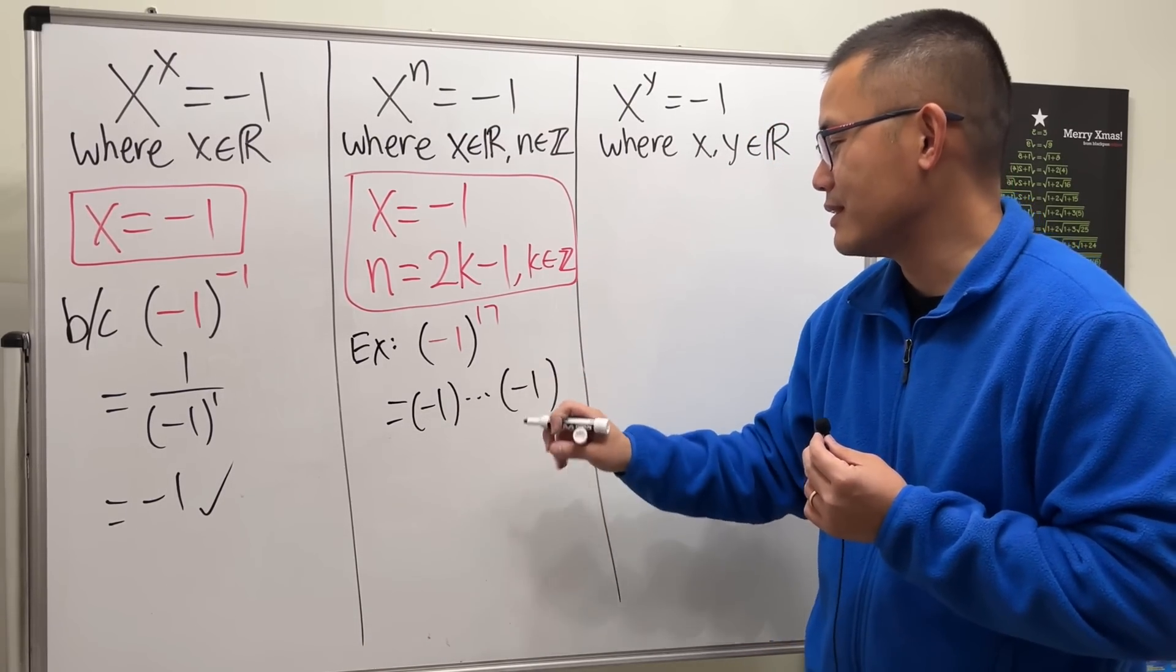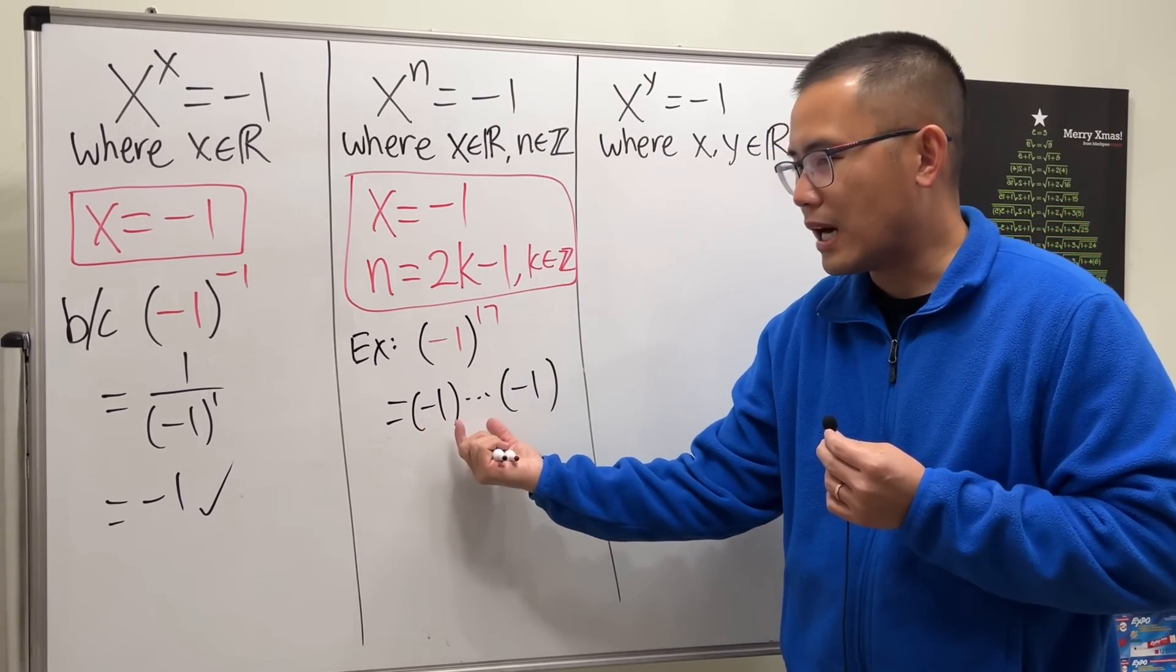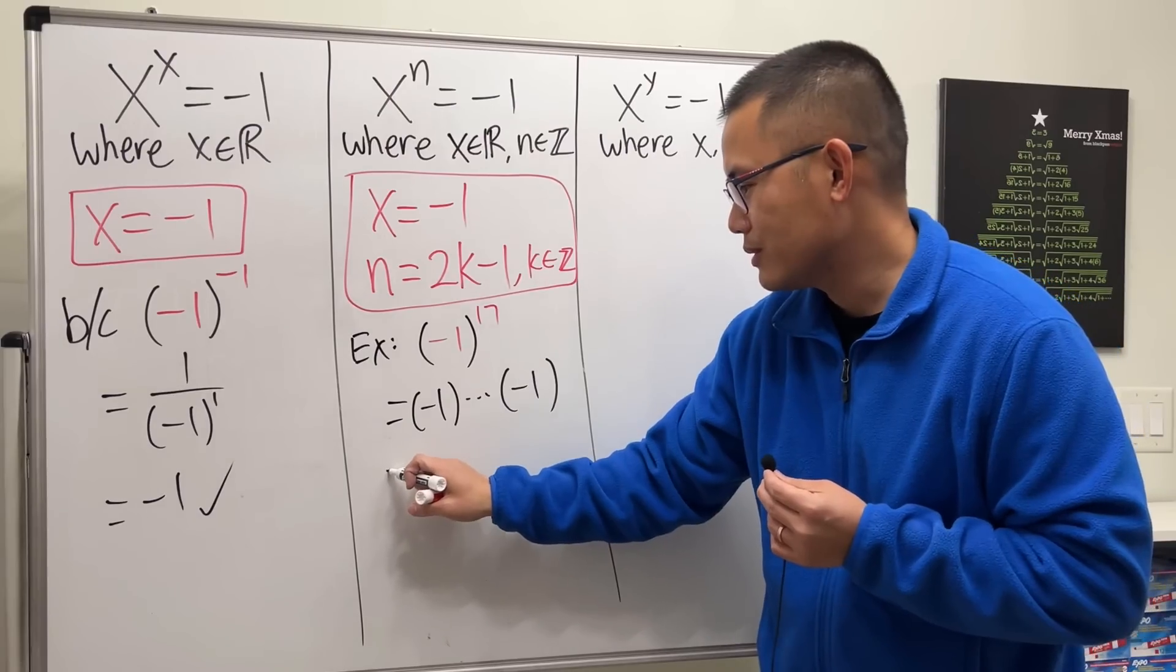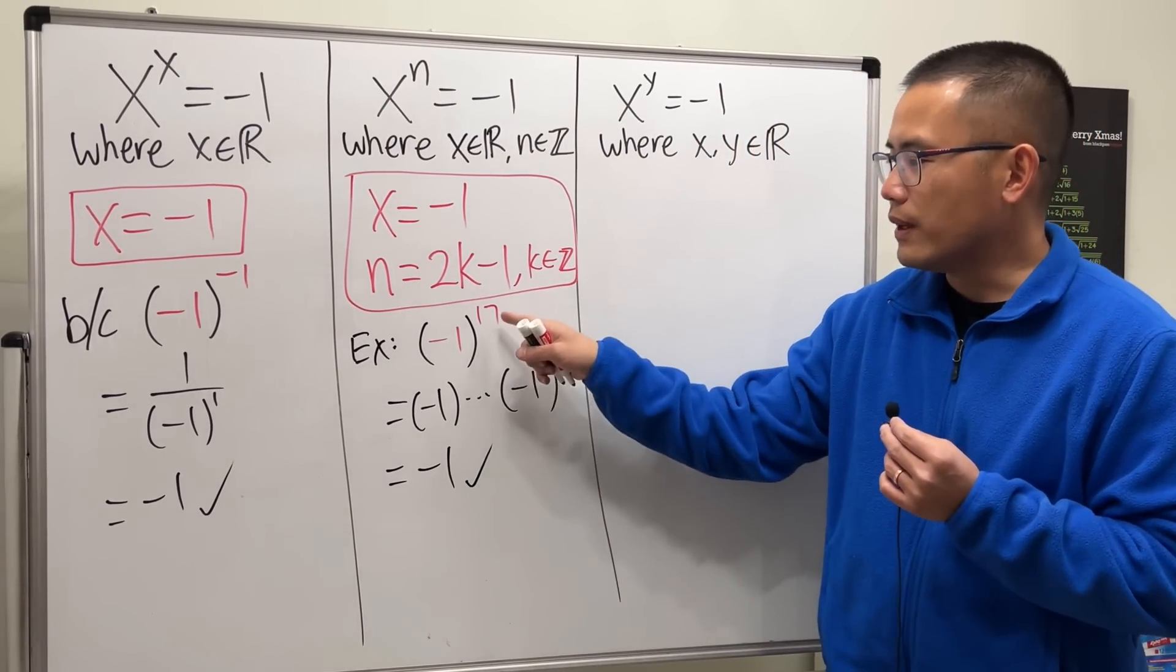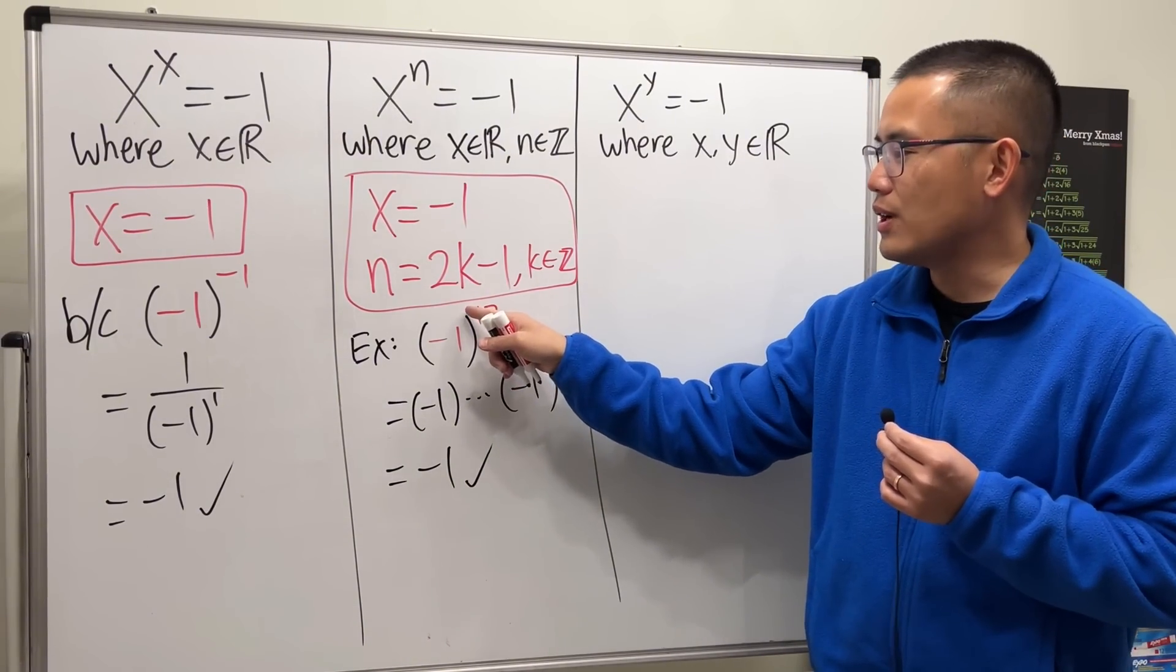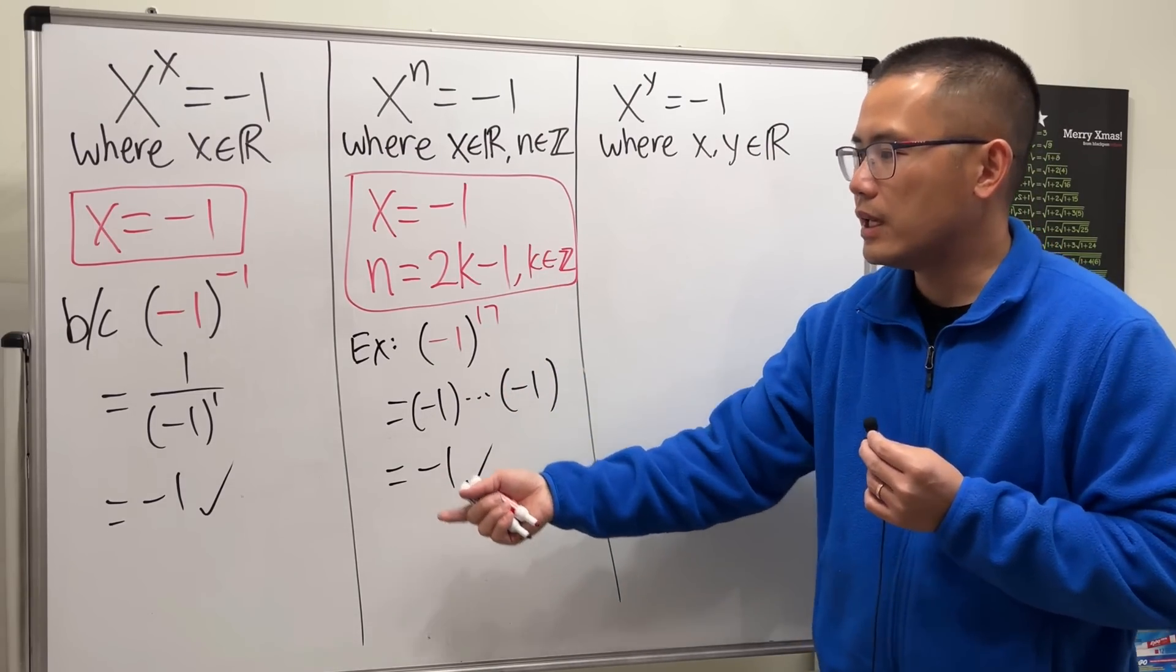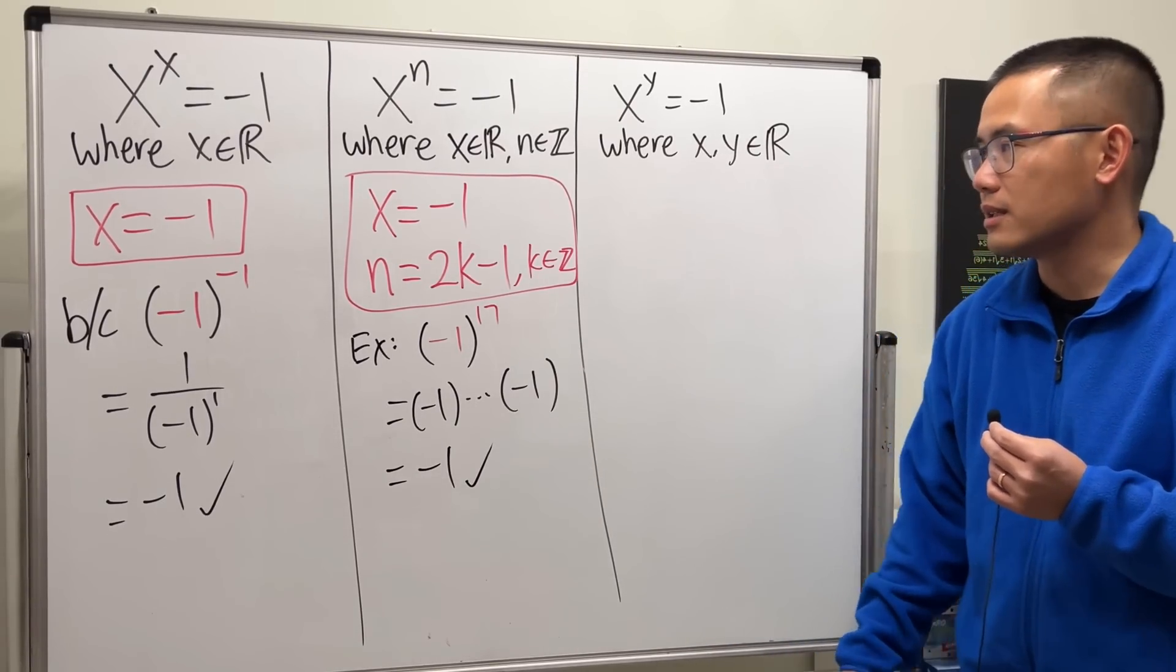So you really will end up with negative 1. Let me just write this down. I'm not going to write down 17 negative 1s, but yeah. If you pair two of them up, it's going to be positive, but at the end, you have a negative. So just do it. You get negative 1, and then you're done. It works for any odd integer. It can also be a negative 17. It will still work. If you have a negative 17, you just bring that down to a denominator, and it will be similar to this. 1 over negative 1. You'll still get negative 1.